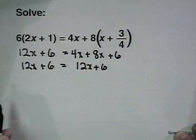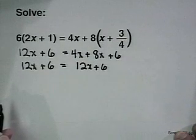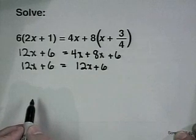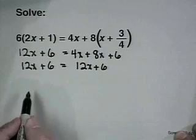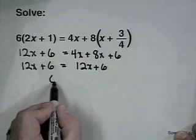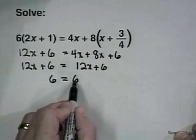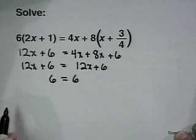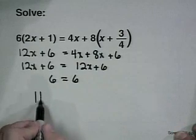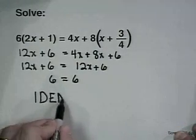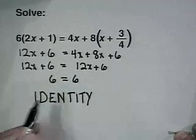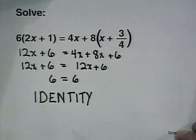Then we'll combine like terms: 12x plus 6 equals 12x plus 6. We'll subtract 12x from both sides to try to get the x's on the same side, and we'll wind up with 6 equals 6. This obviously true statement leads us to believe this is in fact an identity, and its solution set is infinite.